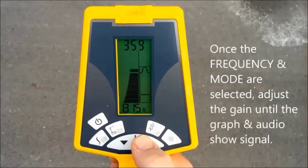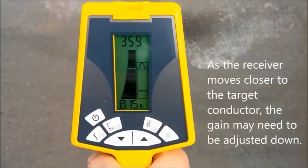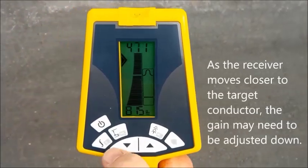Once the frequency and mode are selected, adjust the gain until the graph and audio show signal. As the receiver moves closer to the target conductor, the gain may need to be adjusted down.